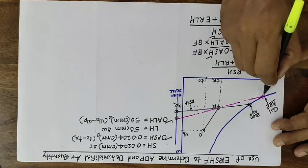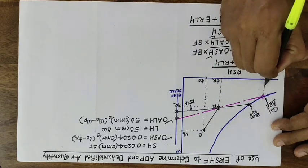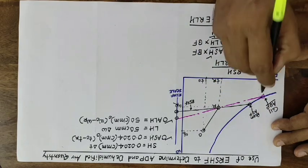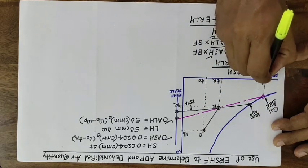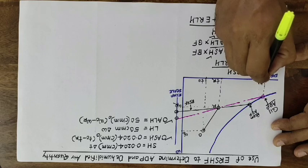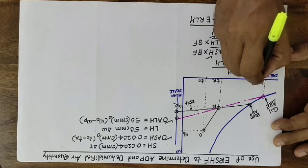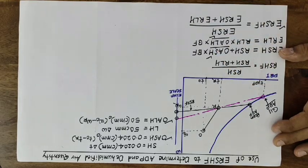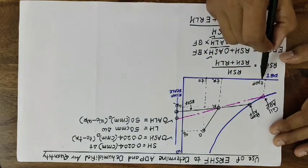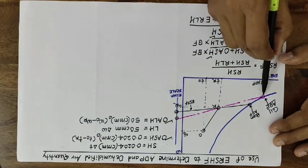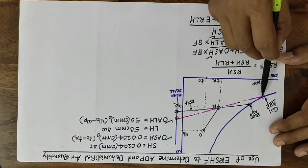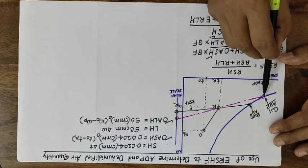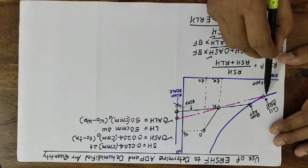We mark this temperature as T_ADP. In this way, the apparatus dew point temperature of the cooling coil is obtained.